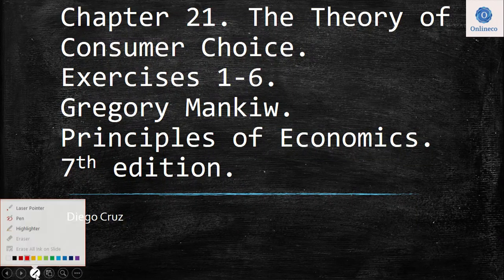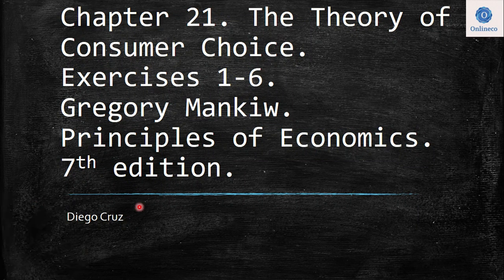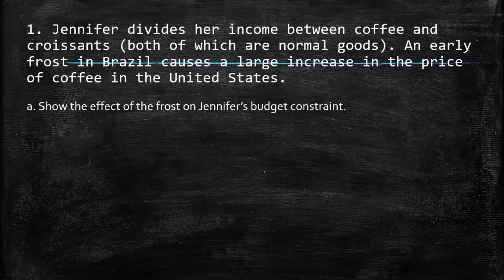Hi everyone, welcome to this video. We are going to develop exercises 1 to 6 of chapter 21, the theory of consumer choice. Remember this is the book of Gregory Mankiw, Principles of Economics. So the first question says: